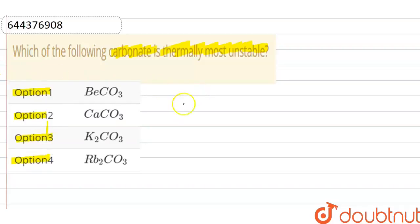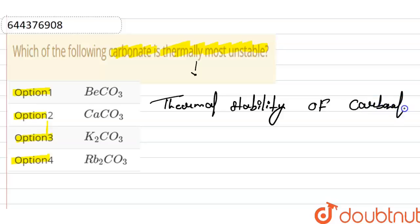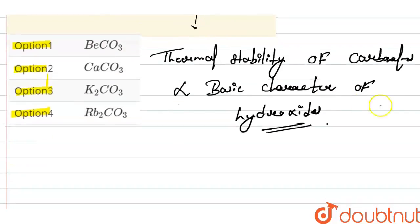First of all, we know that thermal stability of carbonates is directly proportional to the basic character of their hydroxides.